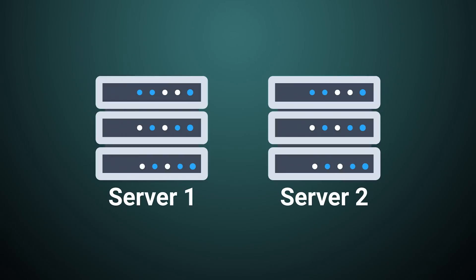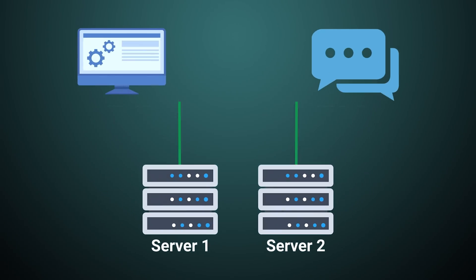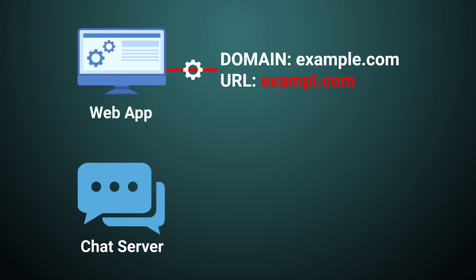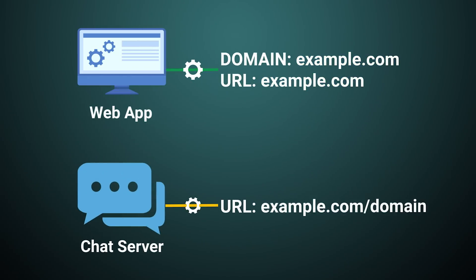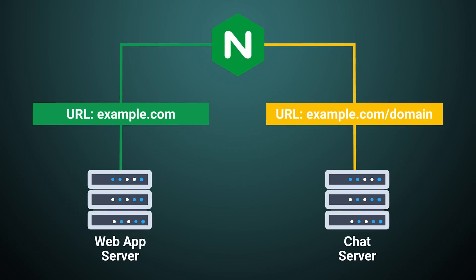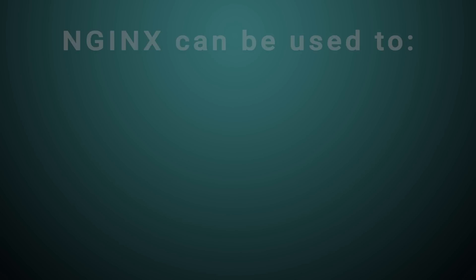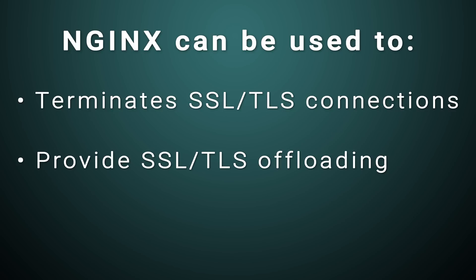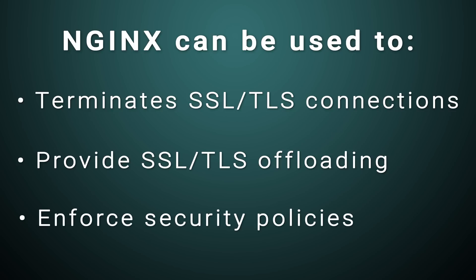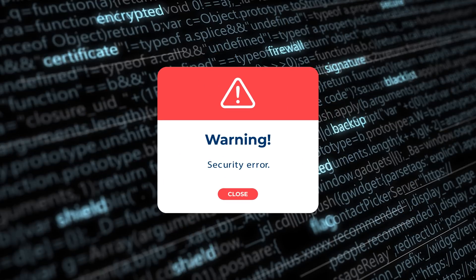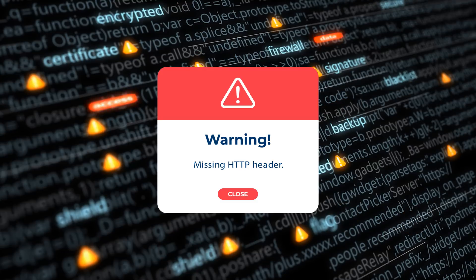For example, let's say you have two backend servers — one running a web application and the other running a chat server. You can configure NGINX to send requests to the web application when the URL matches the domain name, and to the chat server when the URL matches a specific path. This way, NGINX can route traffic to the correct backend server based on the URL. In addition to routing traffic, NGINX can also be used to terminate SSL/TLS connections, provide SSL/TLS offloading, and enforce security policies — for example, rejecting any request that doesn't meet certain security requirements, such as a valid SSL certificate or a specific HTTP header.